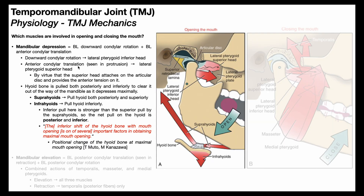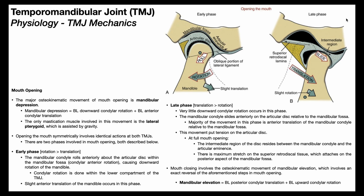The anterior condylar translation occurring in the late phase of mouth opening is controlled mainly by the lateral pterygoid superior head. The superior head does have some attachment on the mandibular condyle, so it can participate a little in early-phase downward mandibular rotation. However, a large insertion of the superior head is on the articular disc. In the late phase, we get an anterior slide of the condyle and movement of the articular disc — it's the superior head of the lateral pterygoid that puts tension on the disc.